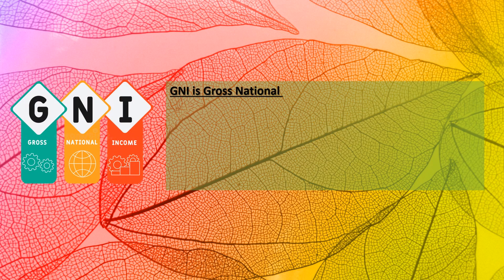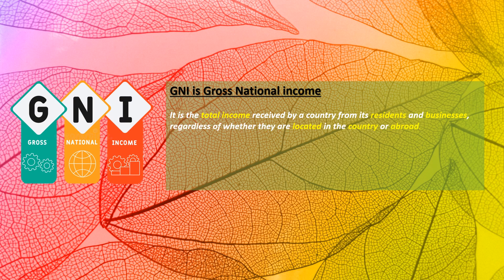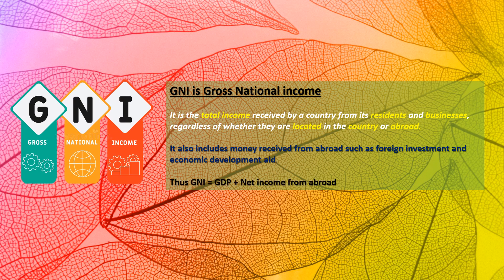Now that we have understood GDP, let's understand GNI — Gross National Income. It is the total income received by a country from its residents and businesses regardless of whether they are located in the country or abroad. It also includes money received from abroad such as foreign investments and economic development aid. Thus, GNI is equal to GDP plus net income from abroad.